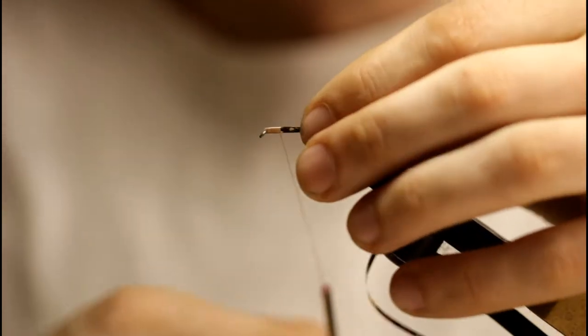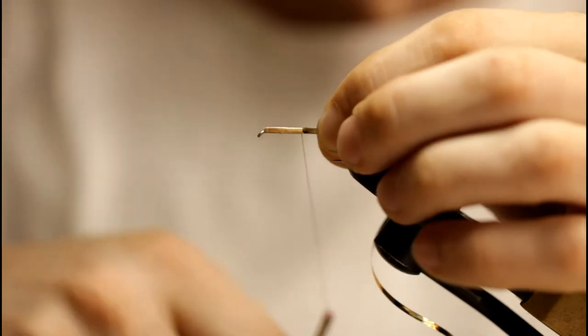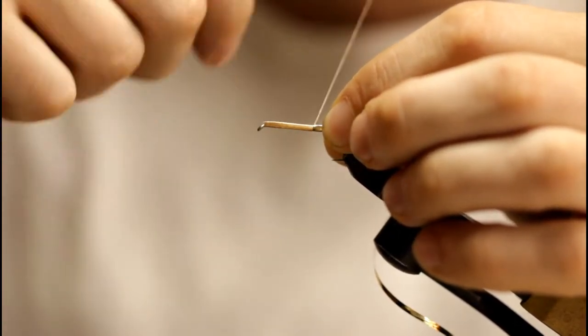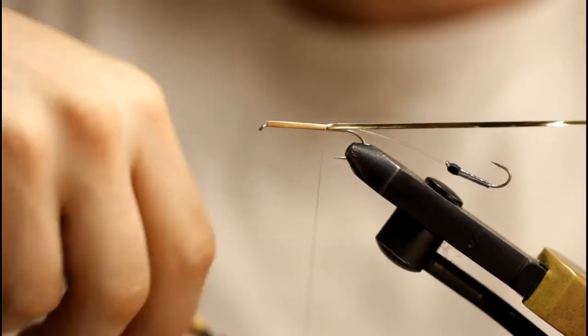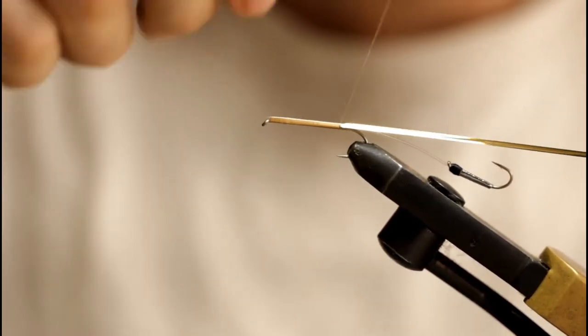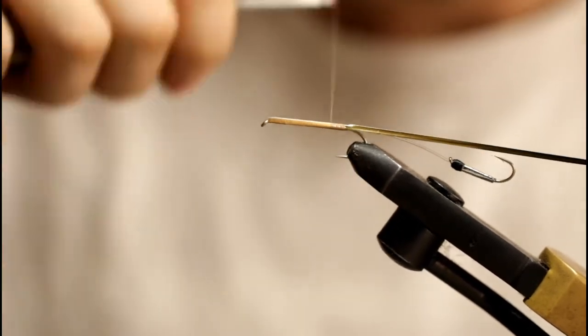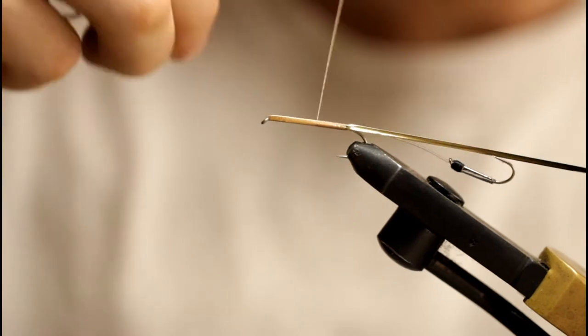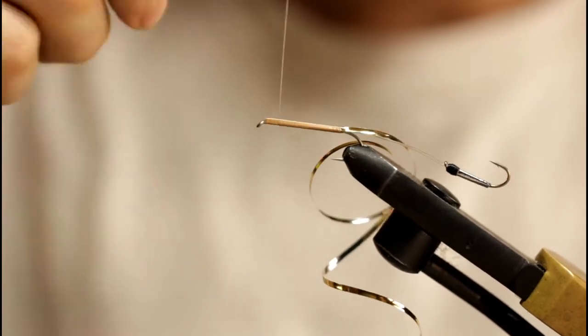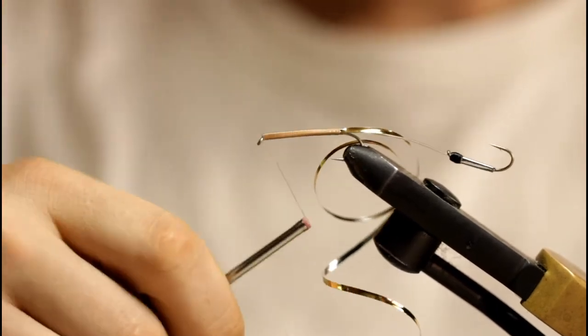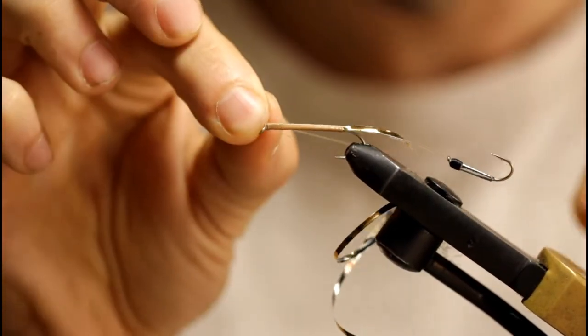All right. I'm going to tie in my piece of tinsel here. Keep working on this body. And back up towards the hook eye and you can apply a lot of pressure here to make sure that monofilament stays on there. Throw a half hitch or a finish in there.